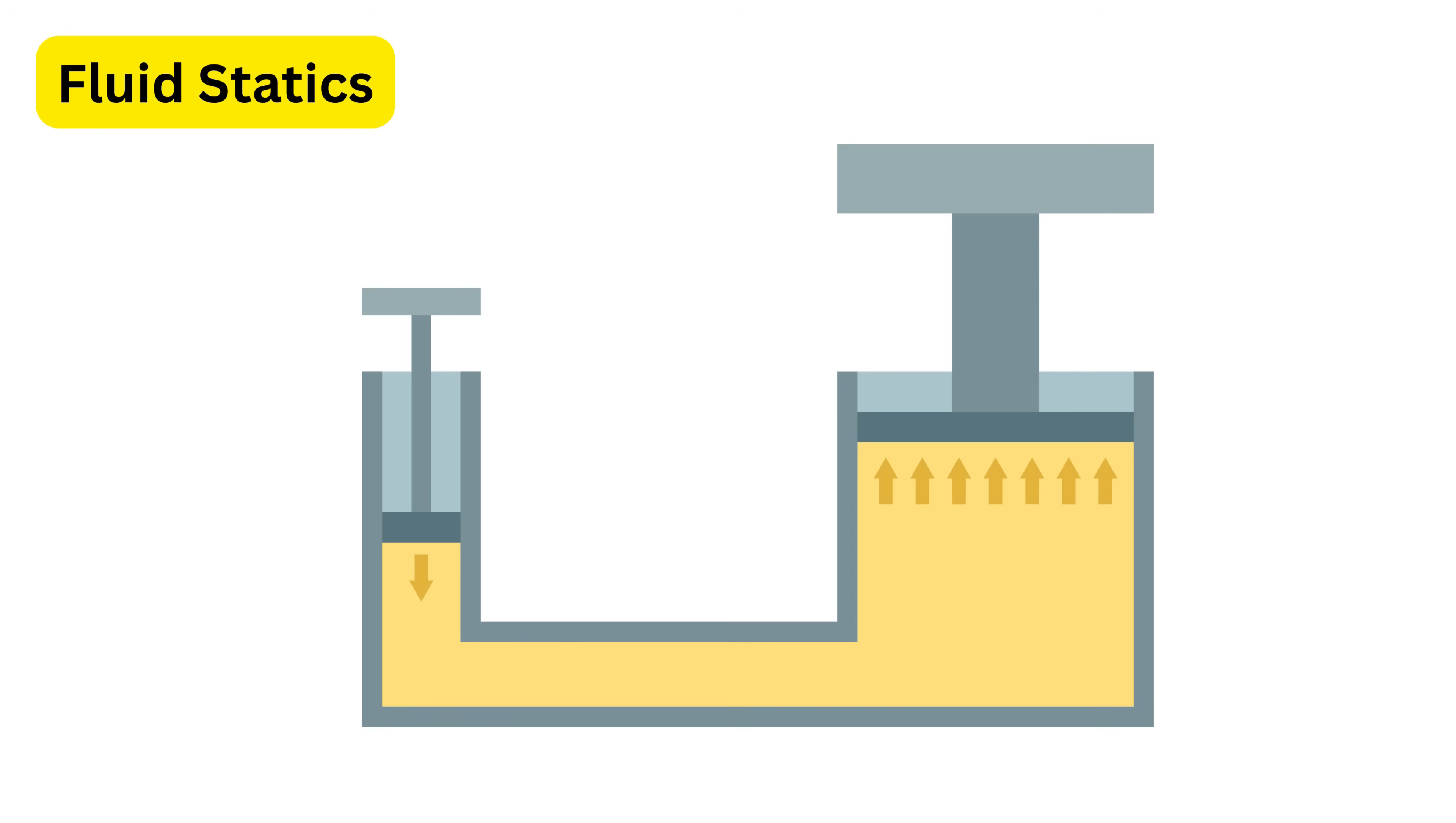Consider a simple solved example. Imagine a completely closed container filled with oil, and inside it there are two pistons, one small and one large. The small piston has an area of 10 square units, and the large piston has an area of 100 square units. Now suppose you apply a force of 10 units on the small piston.